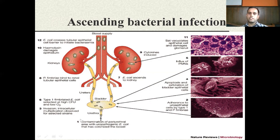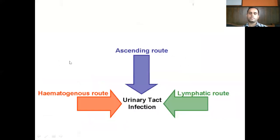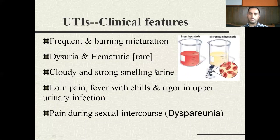The pathogens first infect the urethral region — urethritis — then travel up causing cystitis, and then via the ureter go all the way to the kidneys, causing pyelonephritis. That is the ascending route. There is also a hematogenous route, in which urinary tract infection can follow sepsis, and another lymphatic route as well. However, most cases are caused by ascending bacterial infections.